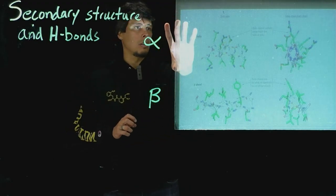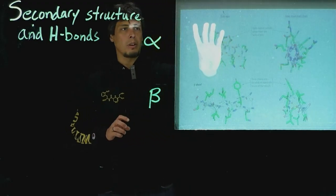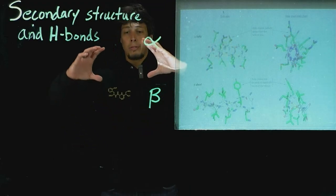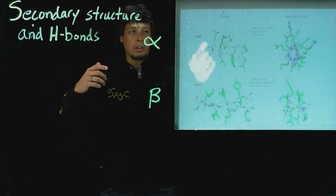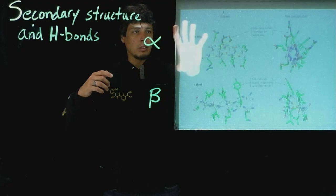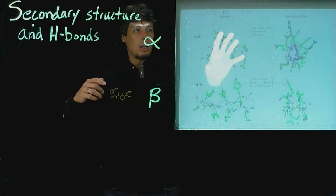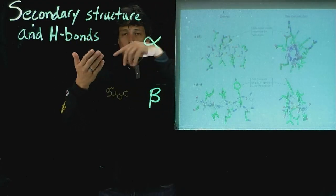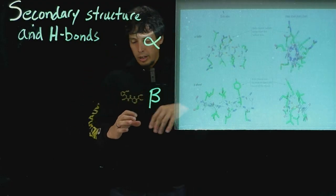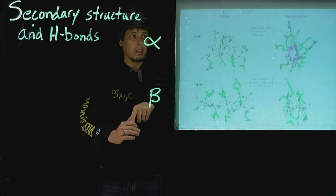So on the top are different configurations or different views of an alpha helix. So on the left panel here, for instance in the top for an alpha helix, we're looking at the side-on view which we've already seen. But here we're looking down the barrel of the alpha helix.